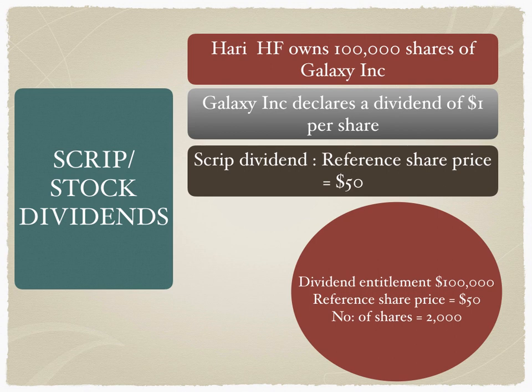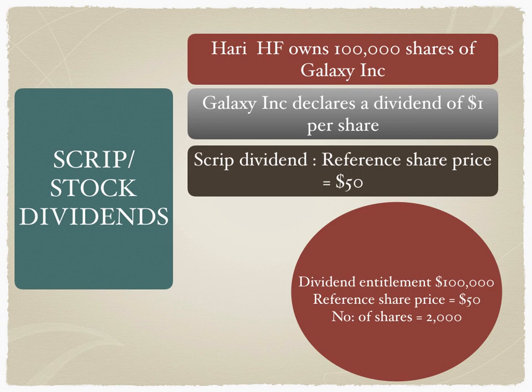In the case of a stock dividend, a new item appears: the reference share price. This reference share price is calculated by the company from stock exchange data and cannot be manipulated — it is declared and announced by the stock exchange. The company simply takes the closing prices of the last six months, computes the weighted average, and arrives at the reference share price. So Hari Hedge Fund will either get $100,000 in cash dividend or 2,000 shares in lieu of that $100,000 — not in addition to it, but in lieu of it, because it is mandatory with choice.